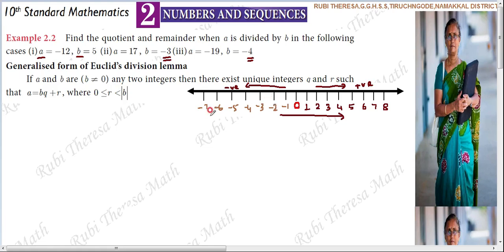On the number line, we need to assume that towards the right values increase. So for negative numbers, minus 5 is bigger than minus 6, because towards the right we get increasing values.